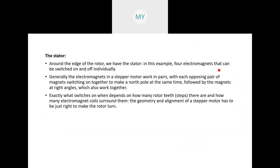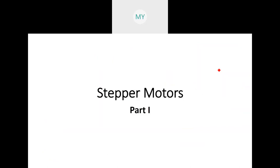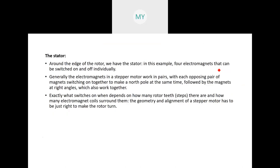The second important part is the stator. Around the edge of the rotor we have the stator — in this example four electromagnets that can be switched on and off individually. The electromagnets in a stepper motor work in pairs, with each opposing pair switching on together to make a north pole, followed by the magnets at right angles. Each pair is known as a phase. What switches on when depends on how many rotor teeth or steps there are and how many electromagnetic coils surround the rotor.